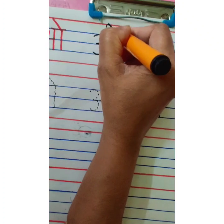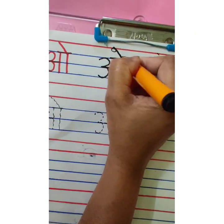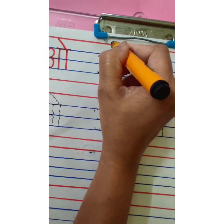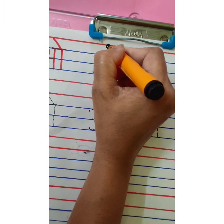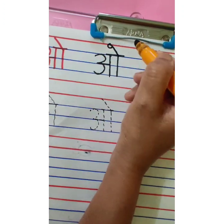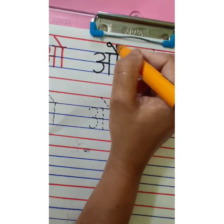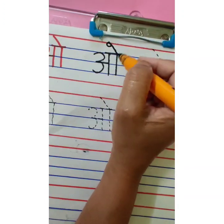Slanting line, which is called matra. And there is a small curve on this matra. This is O.